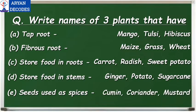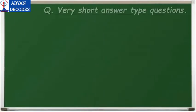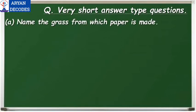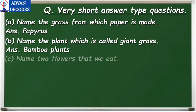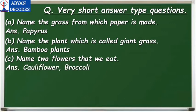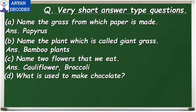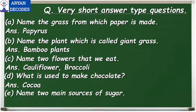Now let's move on to the next worksheet — very short answer type questions. Name the grass from which paper is made — the answer is papyrus. Name the plant which is called giant grass — the answer is bamboo. Name two flowers that we eat — the answer is cauliflower and broccoli. What is used to make chocolate? The answer is cocoa. And the last question: name two main sources of sugar — the answer is sugarcane and honey.